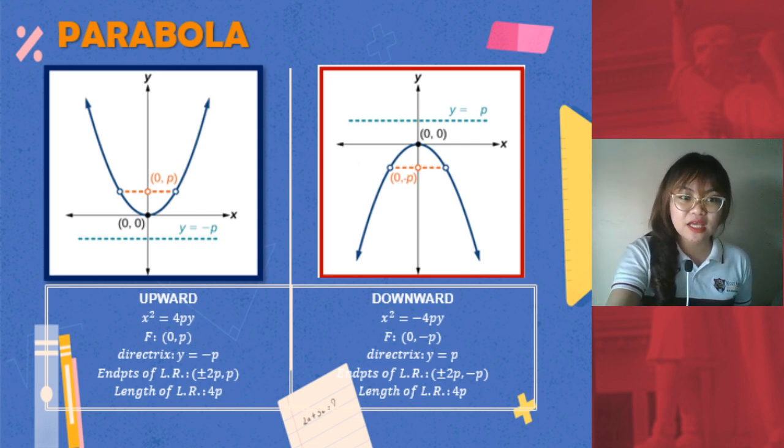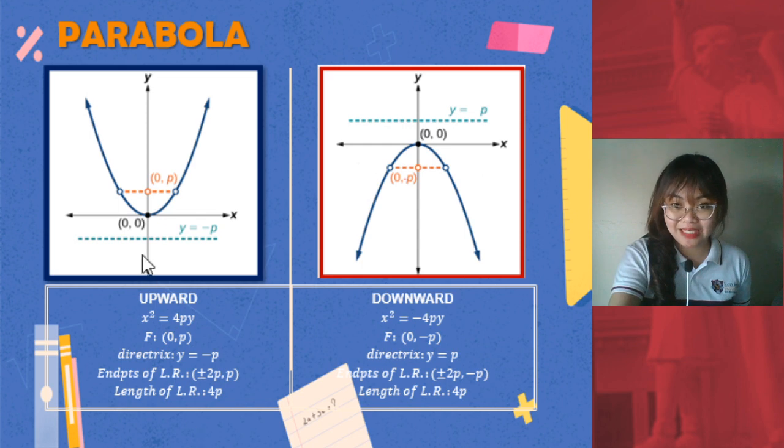So we also have our focus. The coordinates for the focus, we have here for our parabola opening upward, it's (0, p). And then for the parabola opening downward, since it's found on the negative of the y-axis, we have (0, -p). There we go. Next, for the directrix, it's just opposite of the variable here. So if we have an x squared as our equation, the directrix would automatically be y. Because your directrix would be passing along the y-axis. So your equation is also y.